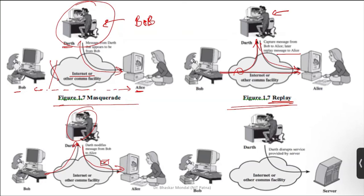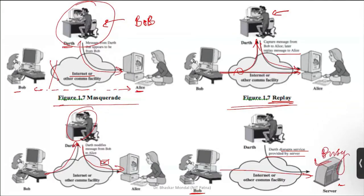Here is another example of disruption. Darth disturbs the server by sending a huge number of requests to it continuously. Bob, who is a legitimate user, does not send unnecessary requests. But as Darth keeps the server busy, Bob is not going to get proper service from the server.